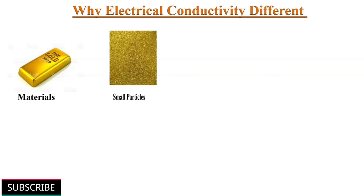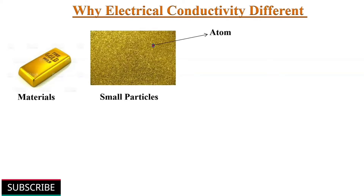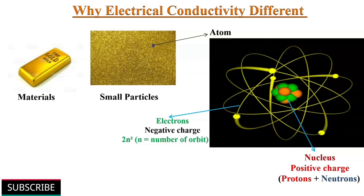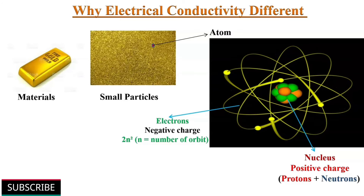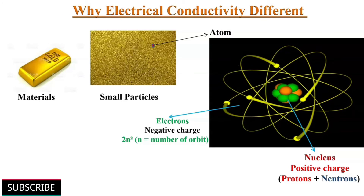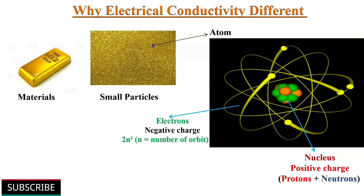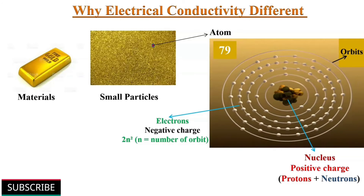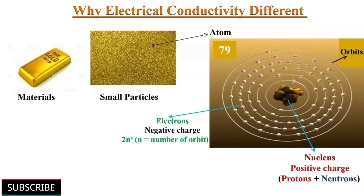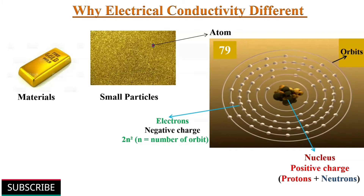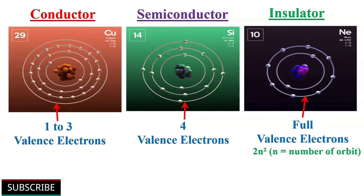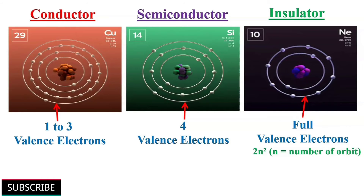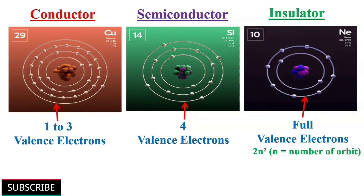All materials are composed of tiny particles called atoms. An atom consists of a central nucleus of positive charge. Around the nucleus there are different circular paths or orbits in which negatively charged electrons move. The number of electrons in any orbit is given by the formula 2n², where n is the number of the orbit. The electrons in the outermost orbit, or valence electrons, determine the electrical property of an element.